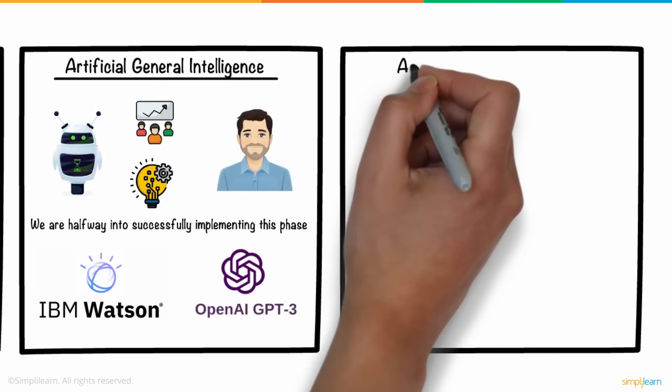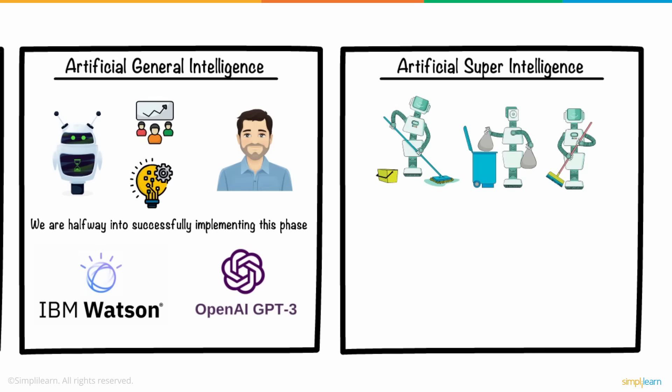And lastly, artificial super intelligence. It is the stage where machines surpass human intelligence. You might have seen this in movies and imagined how the world would be if machines occupied it.